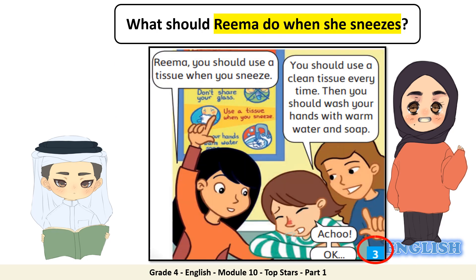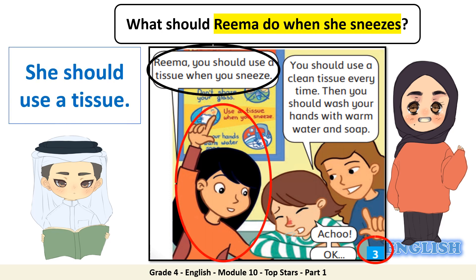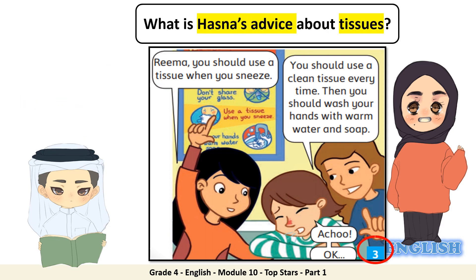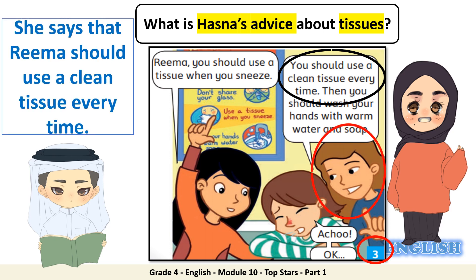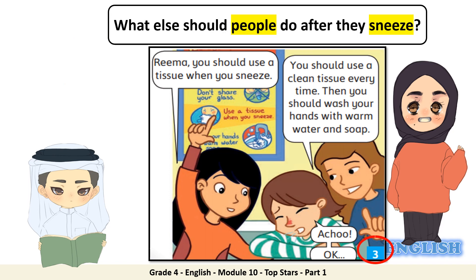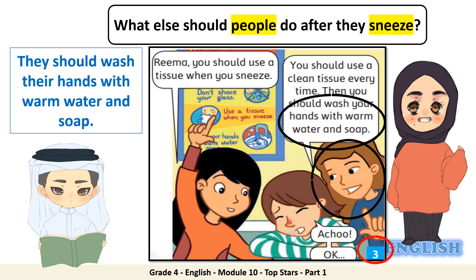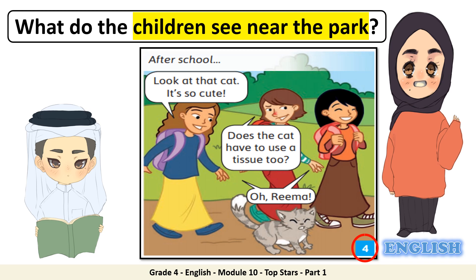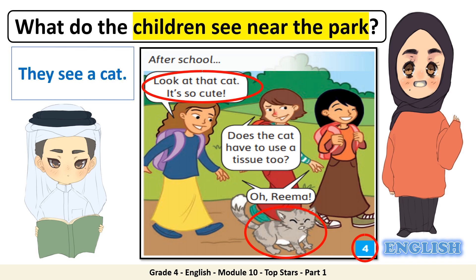Frame three: what should Rima do when she sneezes? She should use a tissue. What is Hasna's advice about tissues? She says that Rima should use a clean tissue every time. What else should people do after they sneeze? They should wash their hands with warm water and soap. Last frame number four: what do the children see near the park? They see a cat. Great job, Ahmed.